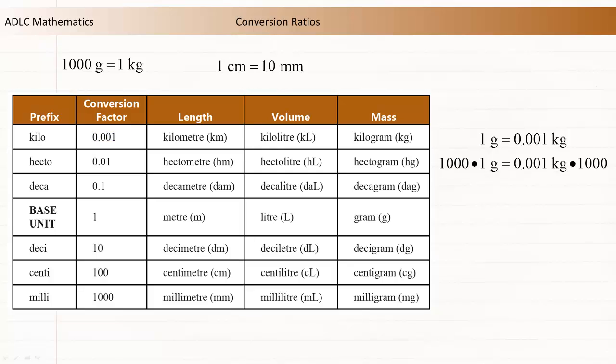However, by multiplying both sides of the equation by 1000, the result is the conversion ratio most people are familiar with. Either of these conversion ratios can be used when converting between grams and kilograms.